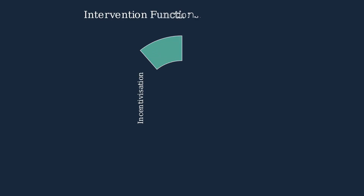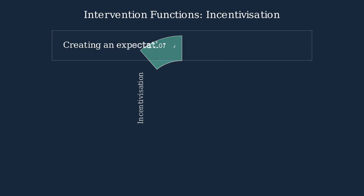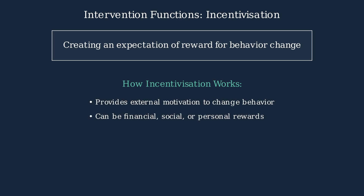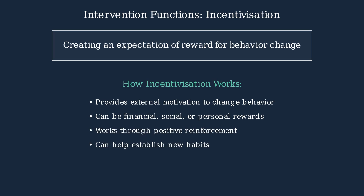In the middle wheel of the behavior change wheel, we find incentivization as one of the nine intervention functions. Incentivization involves creating an expectation of reward to change behavior. This intervention function works by providing external motivation through rewards.